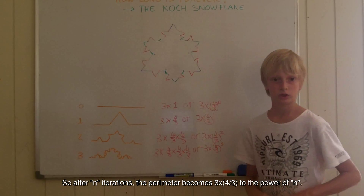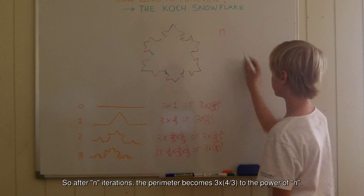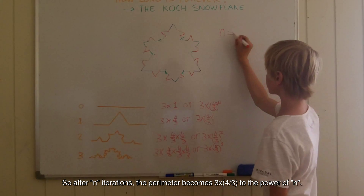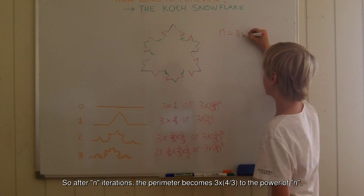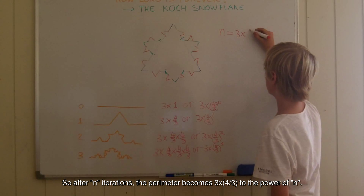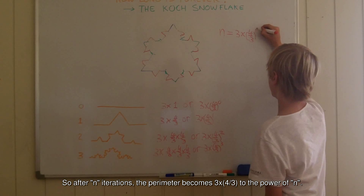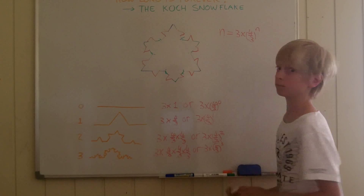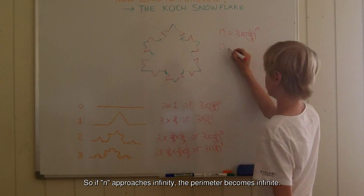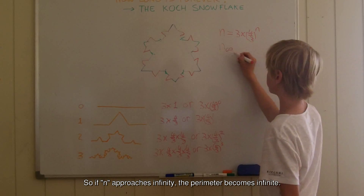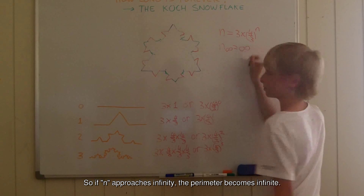So after n iterations, the perimeter becomes 3 times 4 thirds to the power of n. So if n approaches infinity, the perimeter becomes infinite.